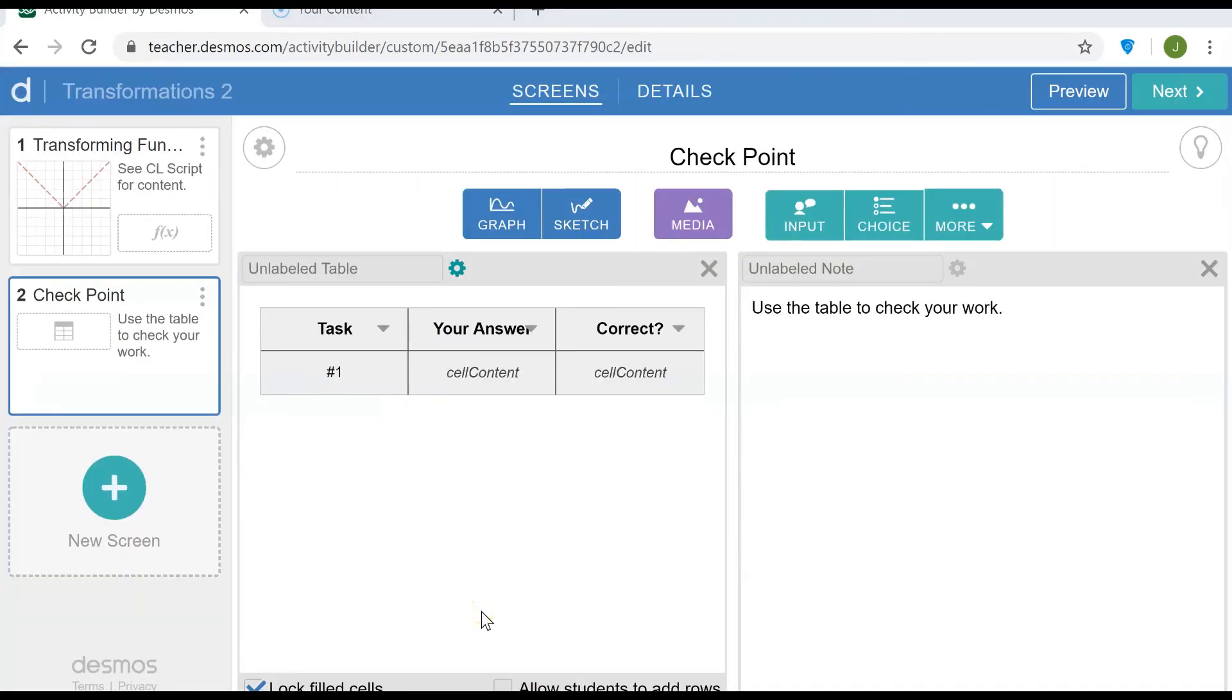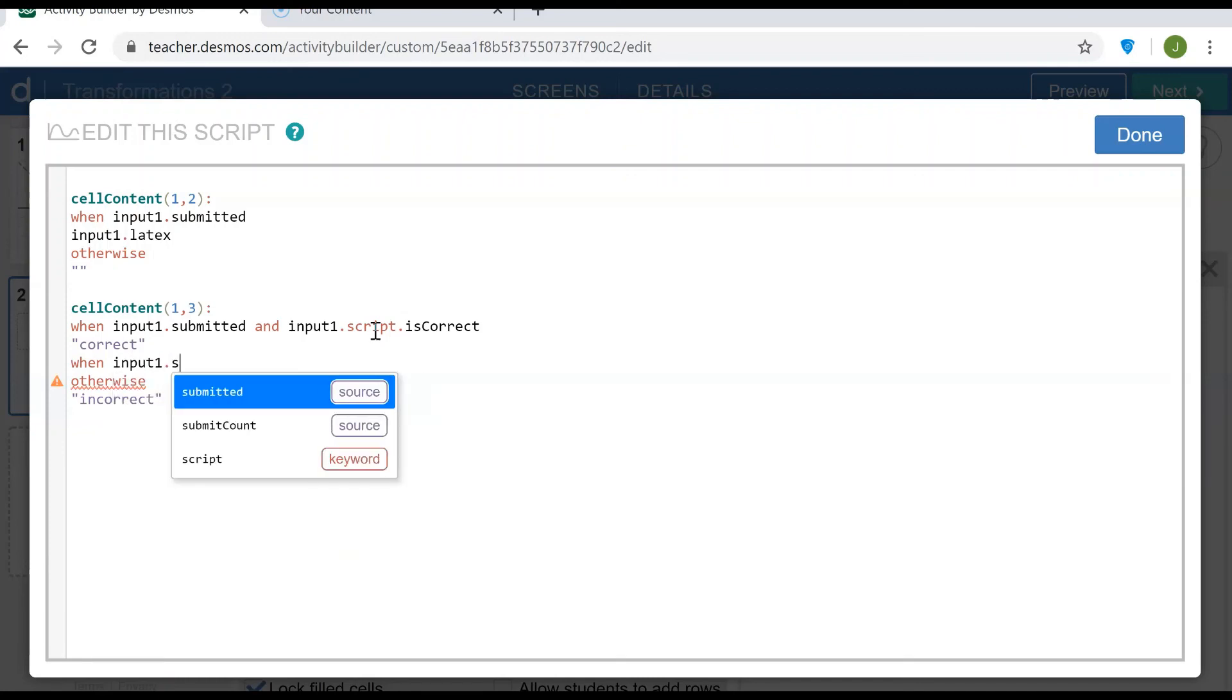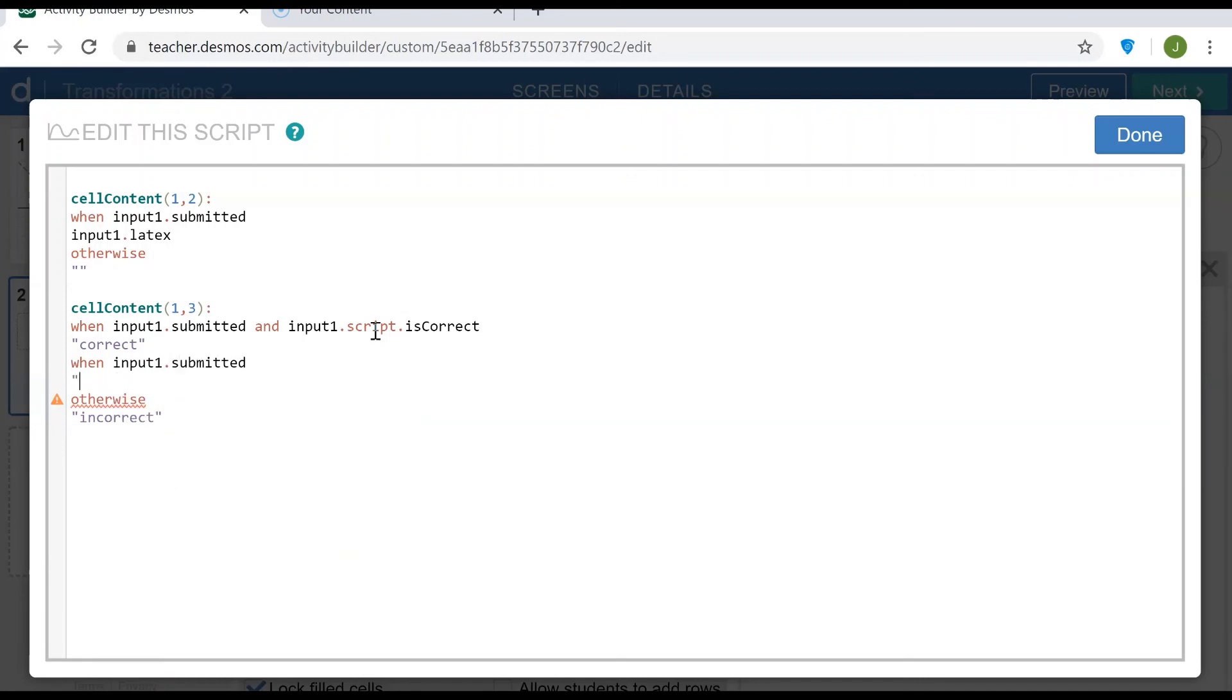So let me add just one more refinement. Let me add a condition that to see the correct response, the input has to be submitted. So I could add that statement here and then a second when statement for just when the input has been submitted, and at that point will show incorrect. And then the otherwise statement could be changed to submit your answer or answer not submitted.